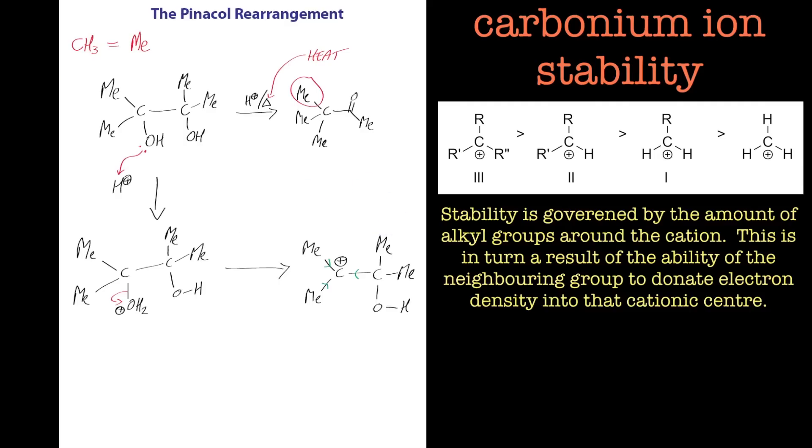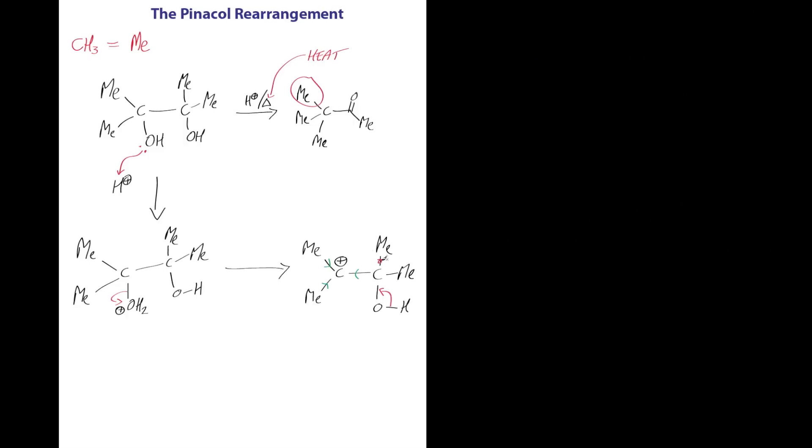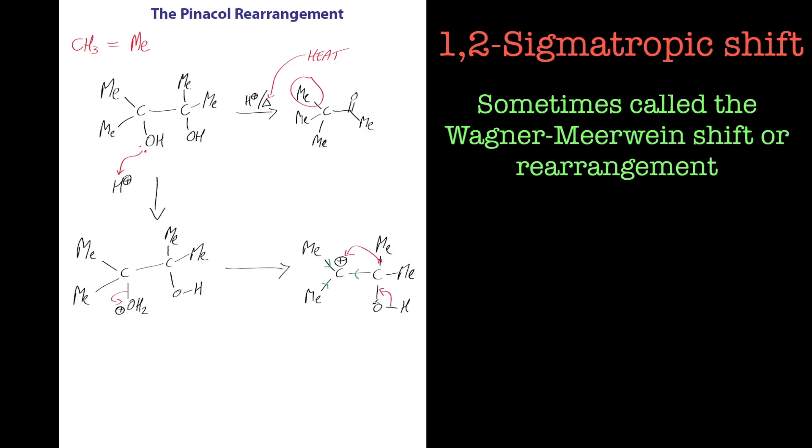The next stage of reaction is to lose a proton again, and we're trying to form that carbonyl group. But in order to do that, because the carbon's already saturated, it needs to lose a bond in the carbon-carbon bond of one of its methyl groups. This is where you get this 1,2-Wagner-Meerwein shift, and that moves over to the carbonium ion and gives us our compound of interest, which is pinacolone. We'll just draw this out quickly.